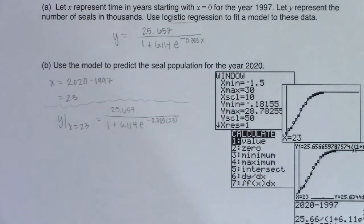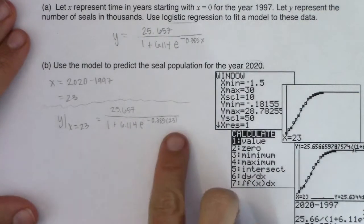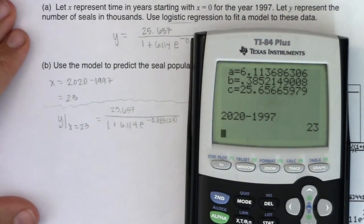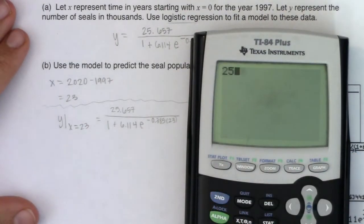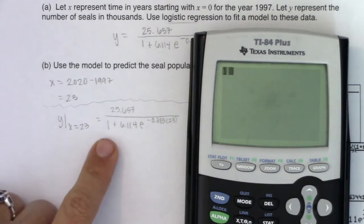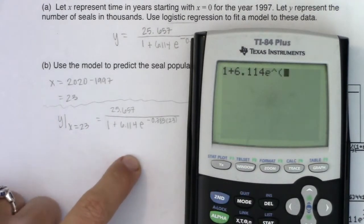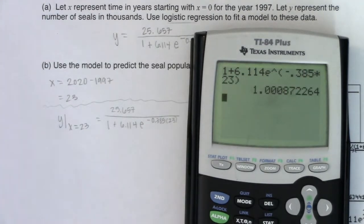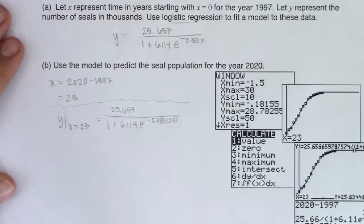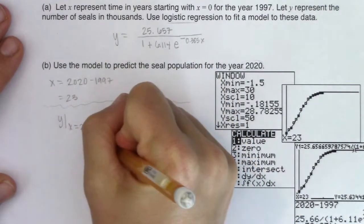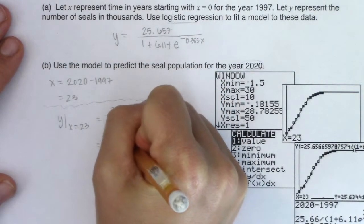Let me put a little separator. This will be 25.657 over 1 plus 6.114 times E to the negative 0.385 times 23. Now, the fun part of this is trying to get this into your calculator the correct way. Personally, I'm just going to do the denominator first, and then I'll take the numerator and divide it by that denominator. Let me do the denominator first. We'll go 1 plus 6.114 times E to the negative 0.385 times 23. If I hit enter, that's my denominator. So I'm going to take 25.657 and I will divide it by that answer. And I'm looking at about 25.635.